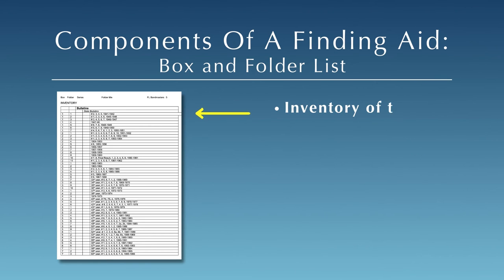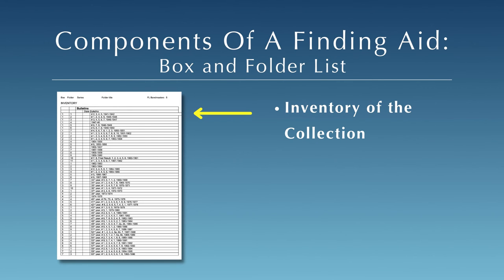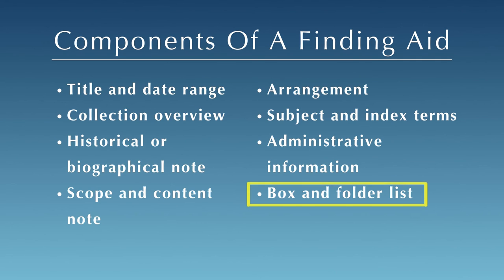The final component of a finding aid is the box and folder list. This is an inventory of the contents of the collection, including the titles of each series and subseries, and the titles of each folder found within each physical box of the collection. Once you have determined that a particular collection is relevant to your research, take some time to explore the box and folder list. This will help you identify materials you would like to request to view at the Archives.